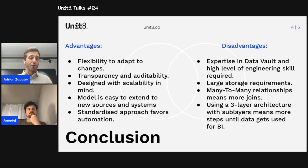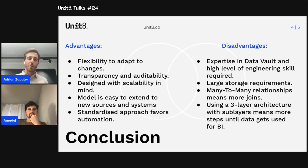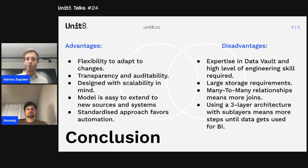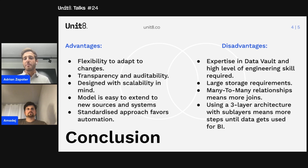Finally, Data Vault uses a three-layer architecture with sub-layers. This is very good for flexibility and adapting to changes, as the many layers absorb business changes, but the problem is that it takes more time for data to travel from the source system to a data mart. There are ways to mitigate this — for near real-time or real-time use cases you can use streaming data to limit the latency — but in general, having so many layers means it takes longer for the data to reach the data mart.